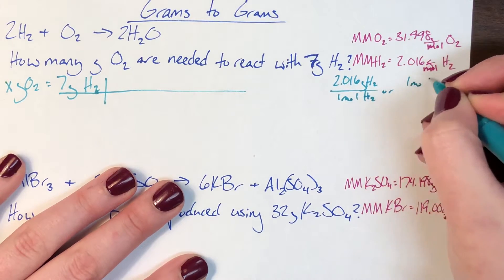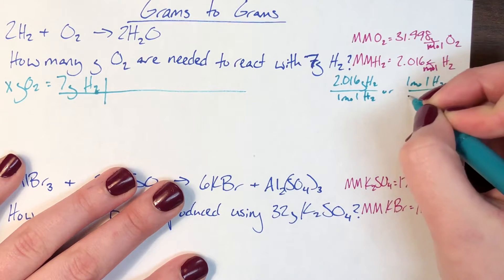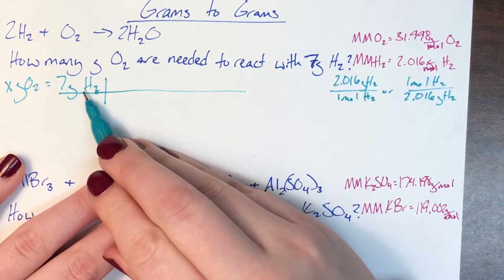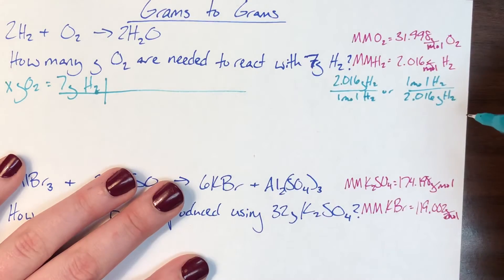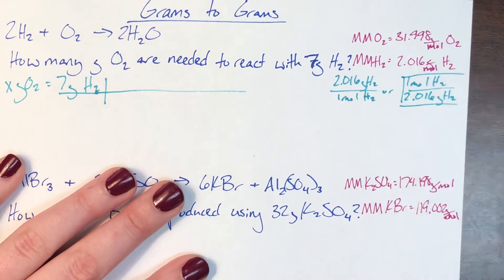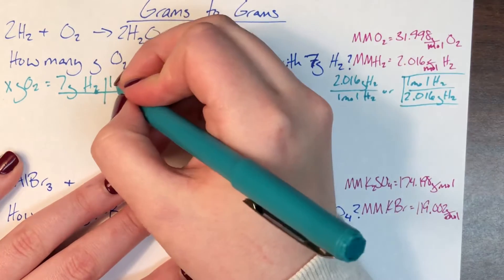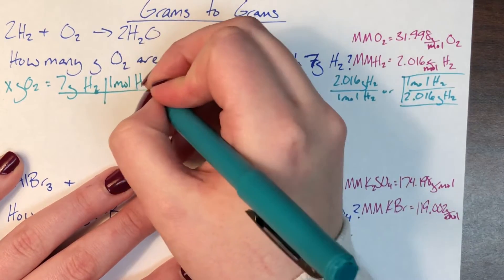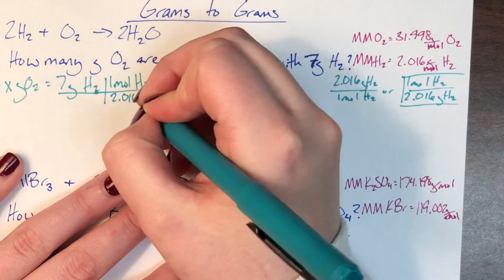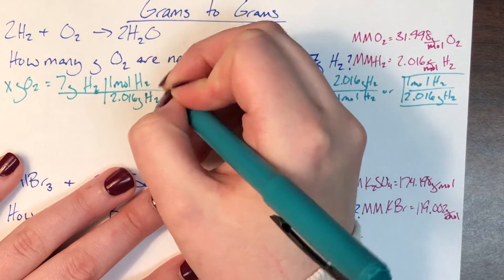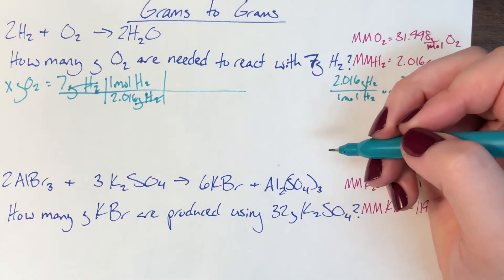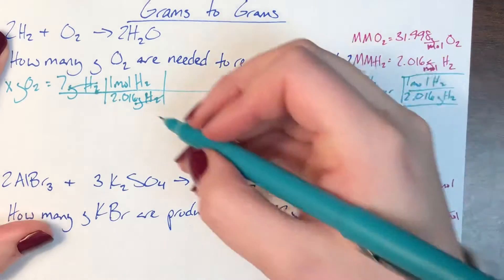For every 2.016 grams of H2 there's one mole of H2, or for every 1 mole of H2 there's 2.016 grams of H2. I'm currently in grams of H2 so I need to get out of it — grams of H2 needs to be on the bottom. So I plug in 1 mole of H2 on top and 2.016 grams of H2 on the bottom. Grams of H2 cancel, leaving me with moles of H2.